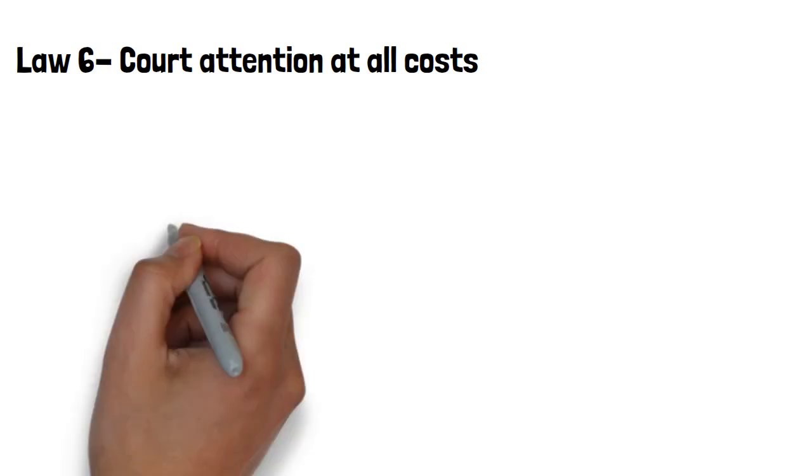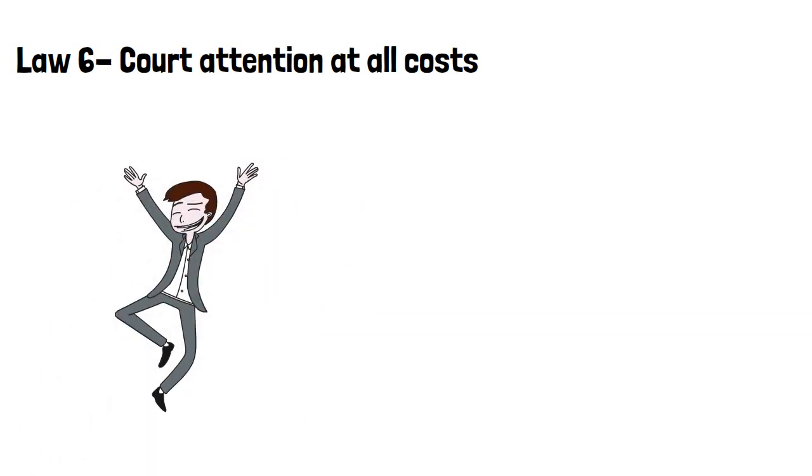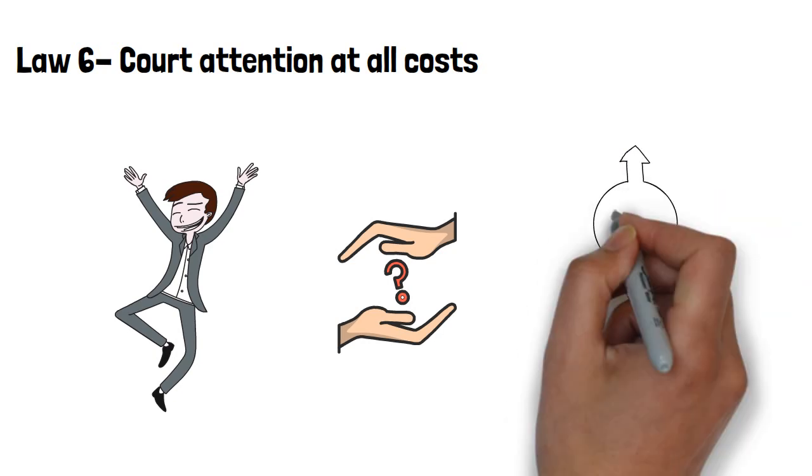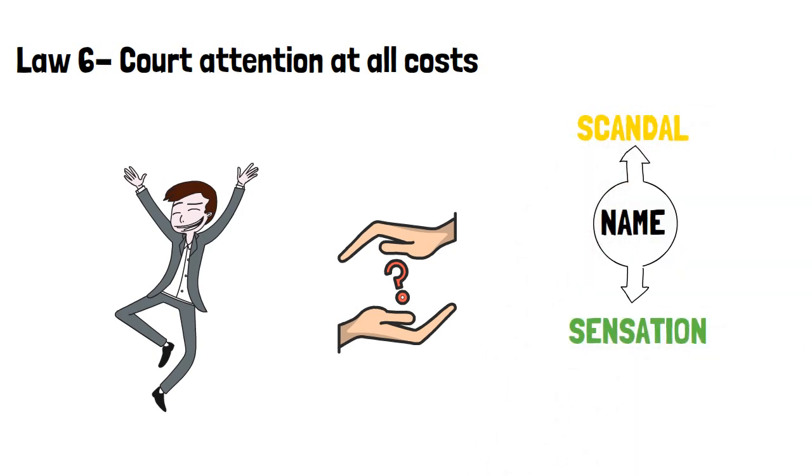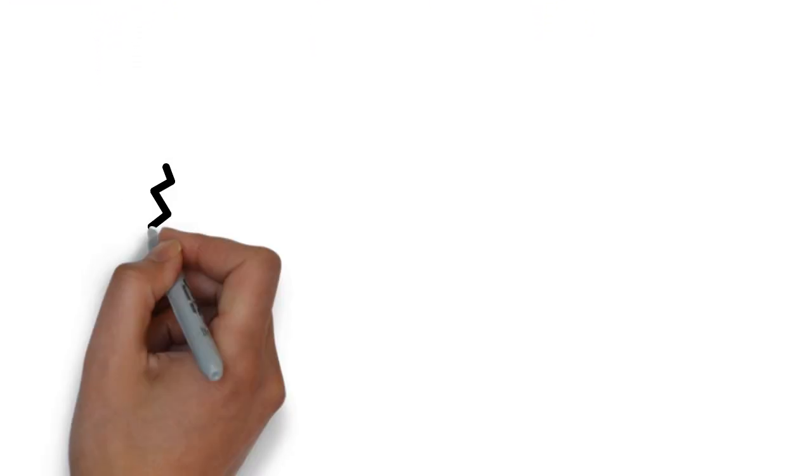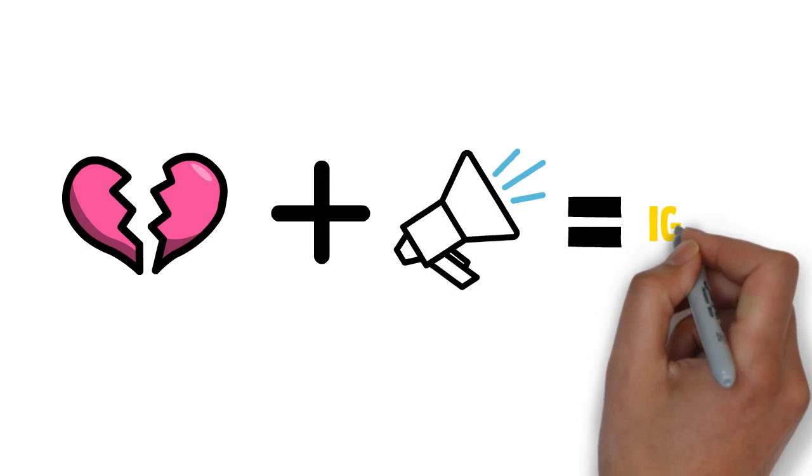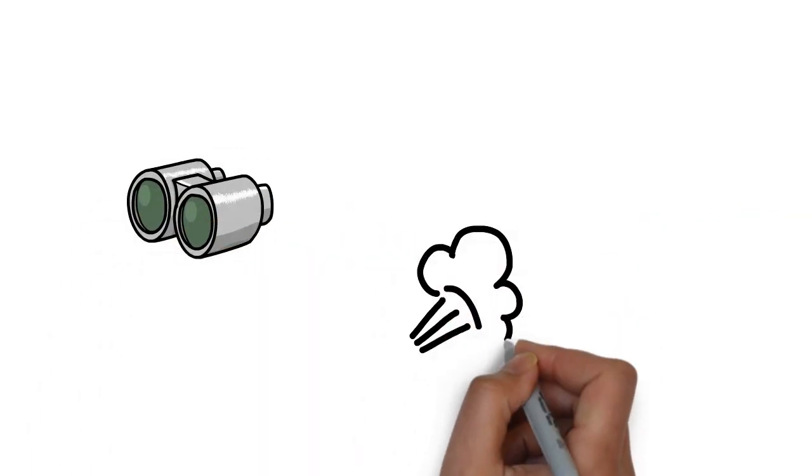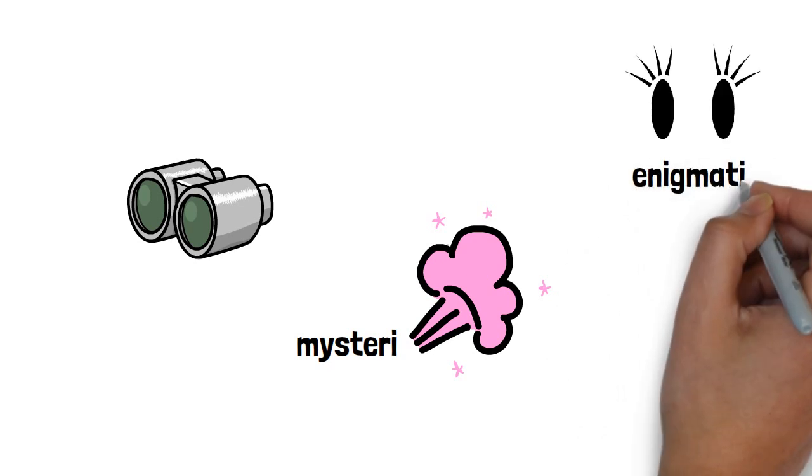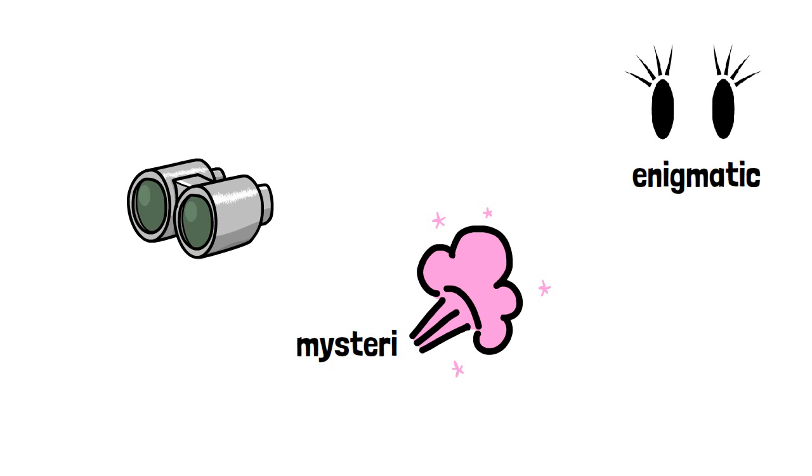Law 6, court attention at all costs. Appearance is everything, therefore you must stand out, make yourself appear more interesting and larger and more mysterious than people. You can achieve this by surrounding your name with scandal and sensation simultaneously. Do not forget the notoriety of any type brings power. Always remember that it is better to be hated or slandered than to be ignored. You can further achieve this by creating an air of mystery around yourself. People are attracted to those who seem enigmatic, so an air of mystery will increase your presence and create anticipation, as everyone will be interested in seeing what your next move would be.